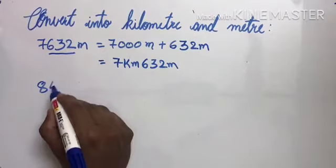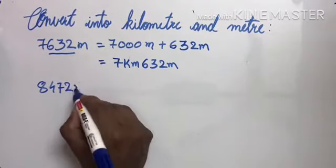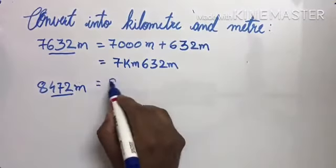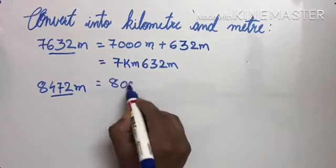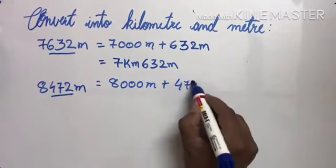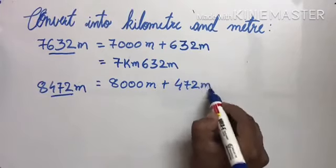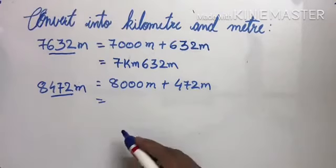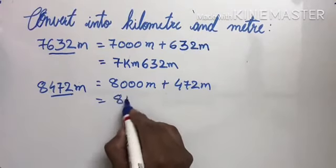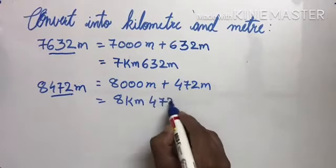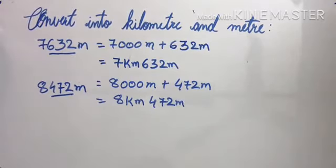If it is eight thousand four hundred and seventy-two meters, we take the last three digits and make them zero. So eight thousand meters plus four hundred and seventy-two meters. Eight thousand meters is eight kilometers, so our answer is eight kilometers and four hundred and seventy-two meters.